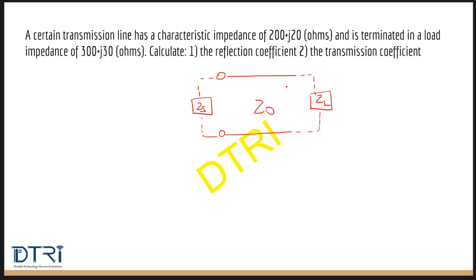This is the circuit diagram. This is the source impedance Zs, this is the load impedance ZL, and this is the characteristic impedance Z0. Let us note down those values: this is the Z0 value and this is the ZL value.